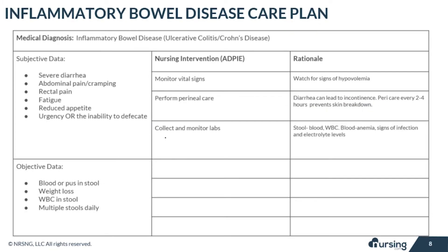You will want to collect and monitor labs. Collect a stool sample to look for blood and white blood cells. Draw blood to look for anemia, signs of infection, and electrolyte imbalances. You'll also need to rule out any bacterial, viral, or parasitic infections in the patient.